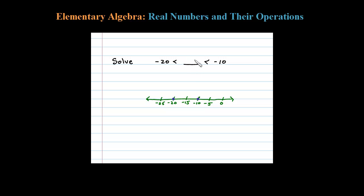Another way to think of this is that the number that we're looking for has to be greater than negative 20, also at the same time, less than negative 10.